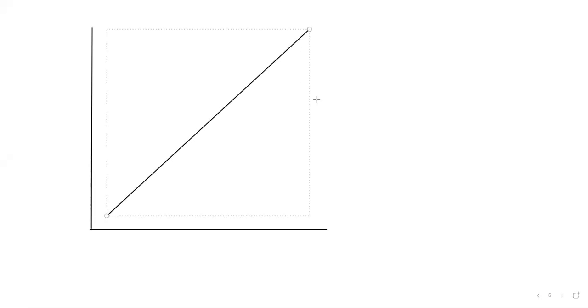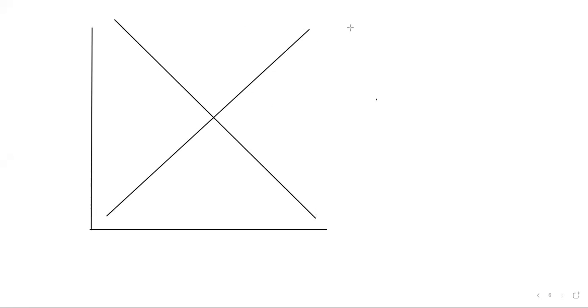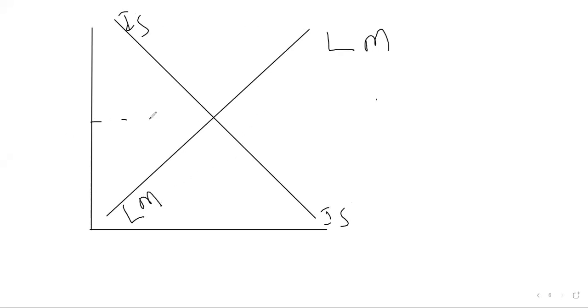We are going to talk about IS-LM — putting them together. I'm going to draw just one graph for IS-LM and task you to go and do the rest. The IS curve is like this, the LM curve is like this. As a matter of fact, to read it: this is IS and this is the LM curve.